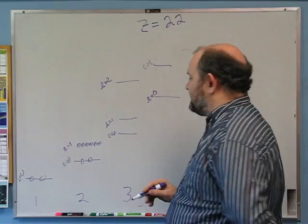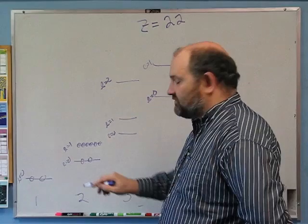So we have 2, 1, 2, 3, 4, 5, 6 — that's how many you can fit in an l equals 1 state or a p orbital.